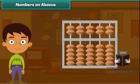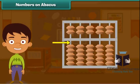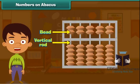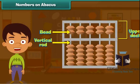An abacus is a tool used for calculations. It is still quite popular in South Asian countries, especially China. It is made up of a rectangular wooden frame that contains vertical rods along which beads are slid and calculations are done. A beam divides the rectangular frame into two parts: the short upper deck and the long lower deck.